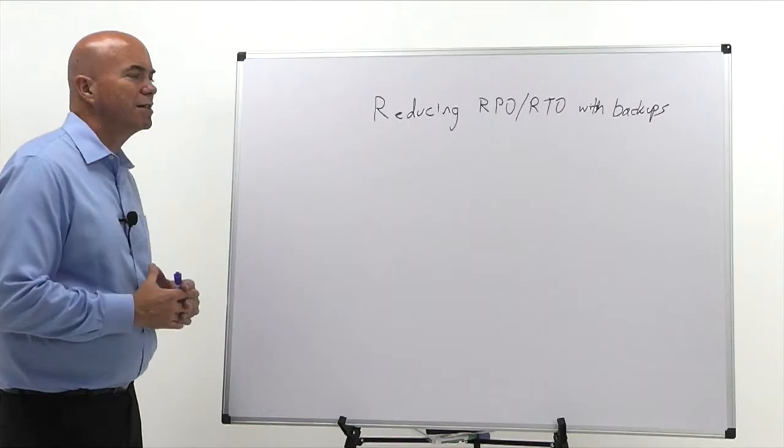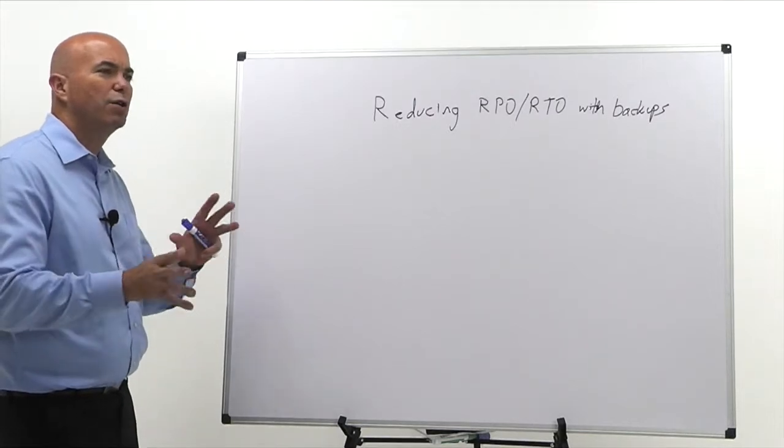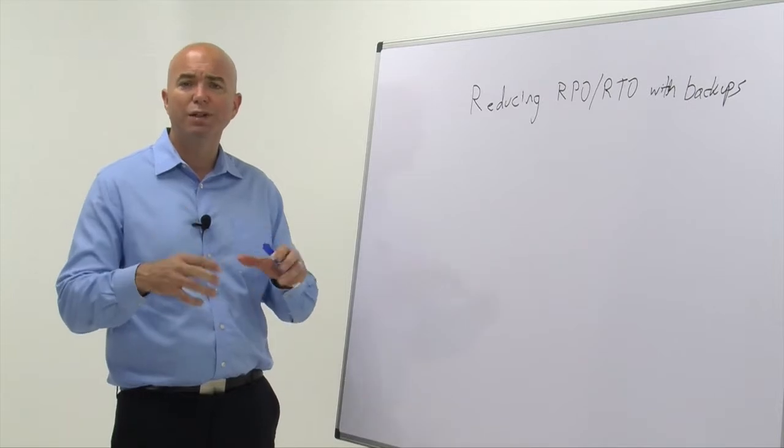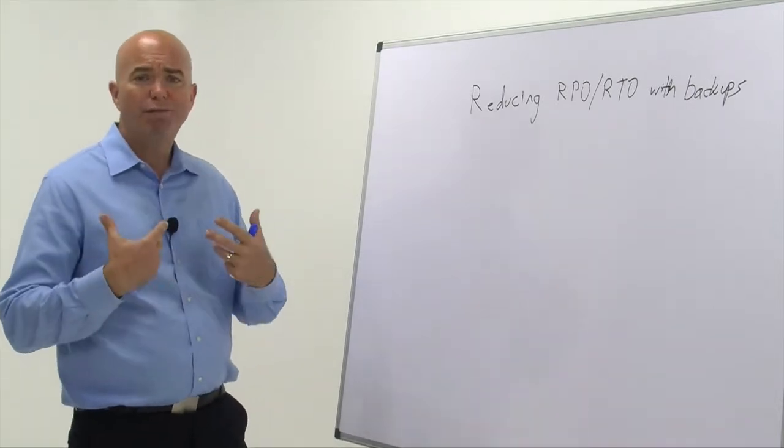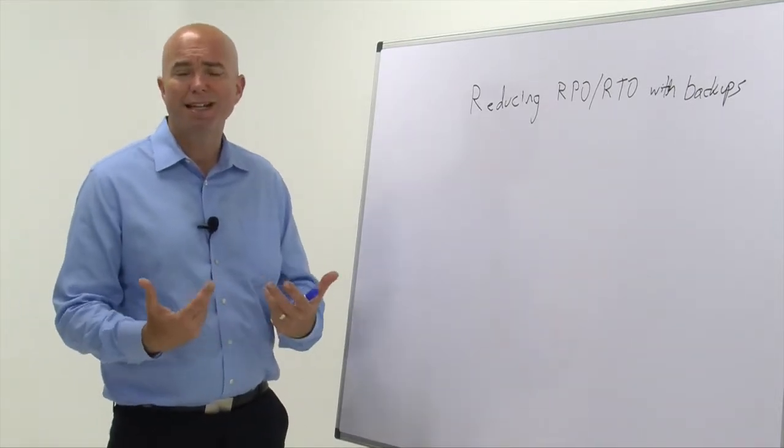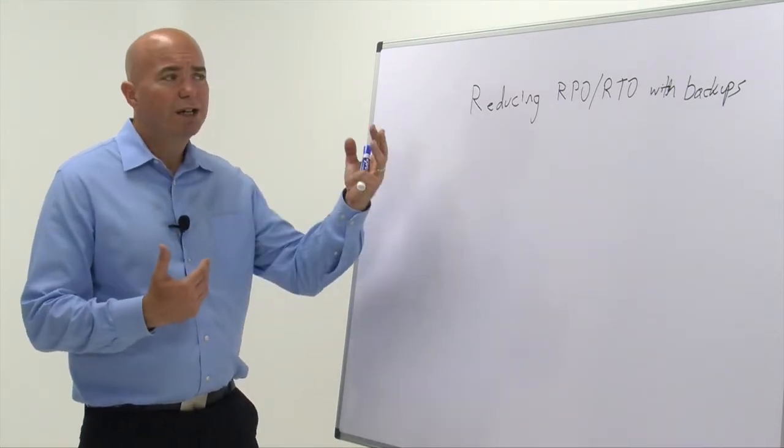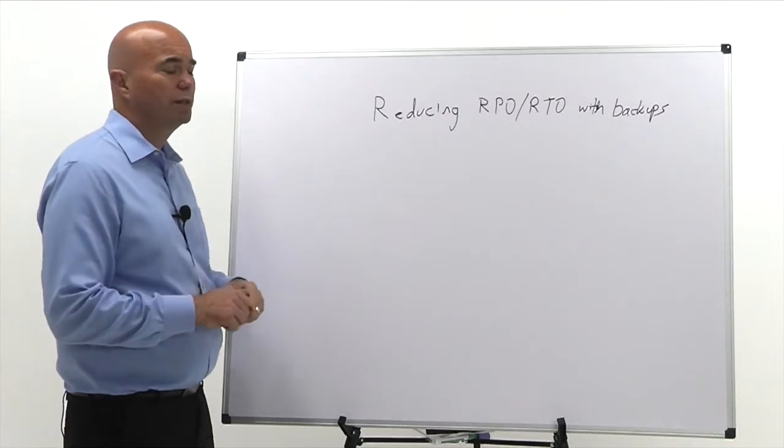So the big one is how do we reduce RPO and RTO? In that workshop we give you two designs to do that. One, we leverage primary storage, very unique and creative use of snapshots, and talk you through that. The other is we can actually make backups work a little bit harder.